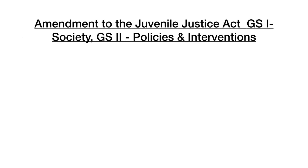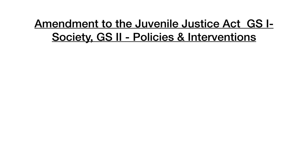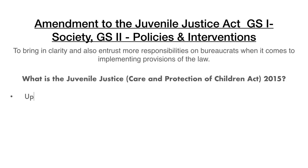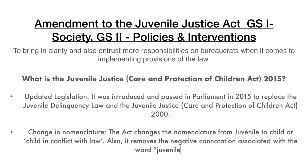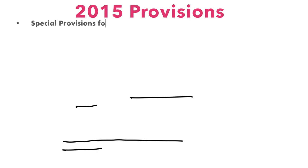The next headline is about the amendment to the Juvenile Justice Act — a part of GS Paper 1 Society and GS Paper 2 Policies and Interventions. The amendments will bring more clarity to the provisions of the Juvenile Justice Act and give more responsibility for implementing these provisions to District Magistrates. What is the Juvenile Justice (Care and Protection of Children) Act 2015? It replaced the earlier juvenile delinquency law and the Juvenile Justice Act of 2000. One key change is the nomenclature — from 'juvenile' to 'child' or 'child in conflict with law', removing the negative connotation associated with the word 'juvenile'.